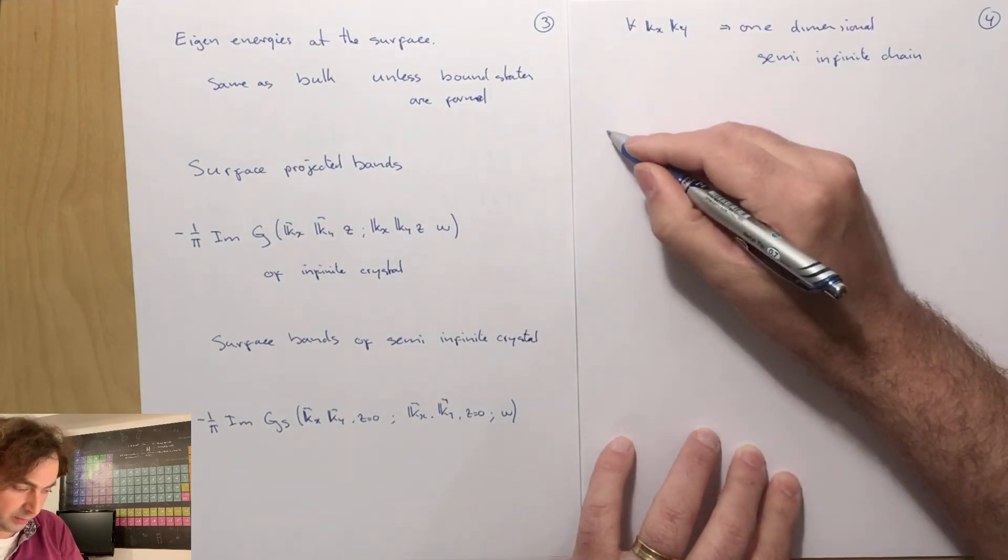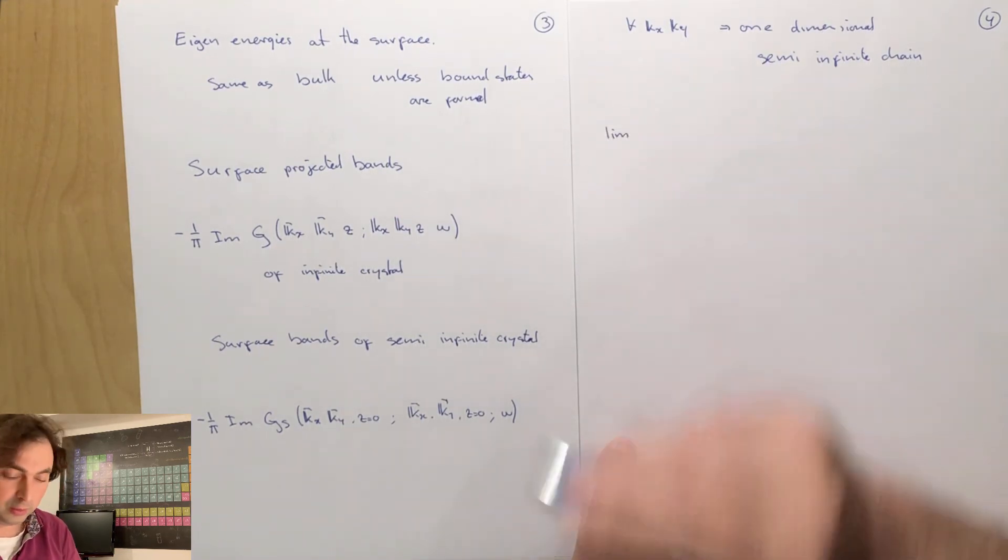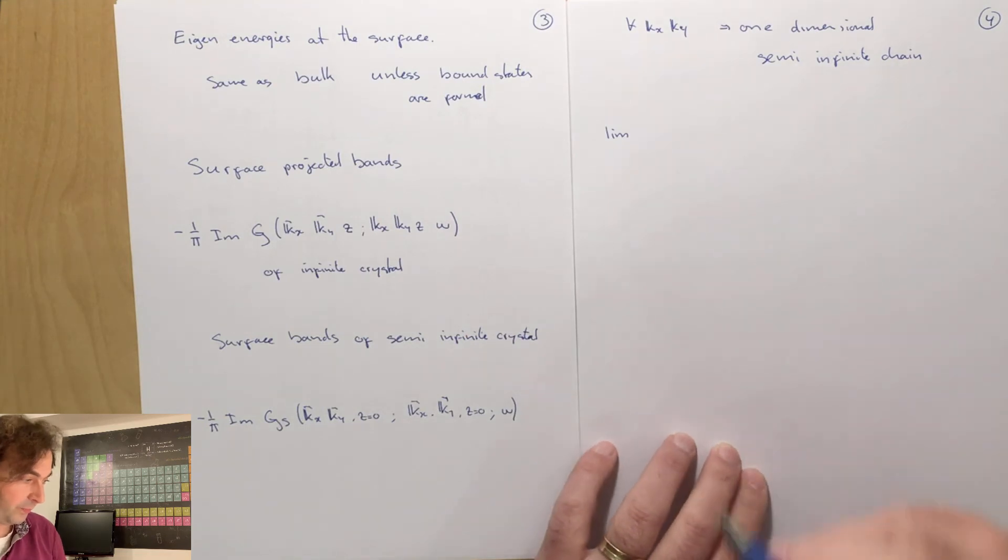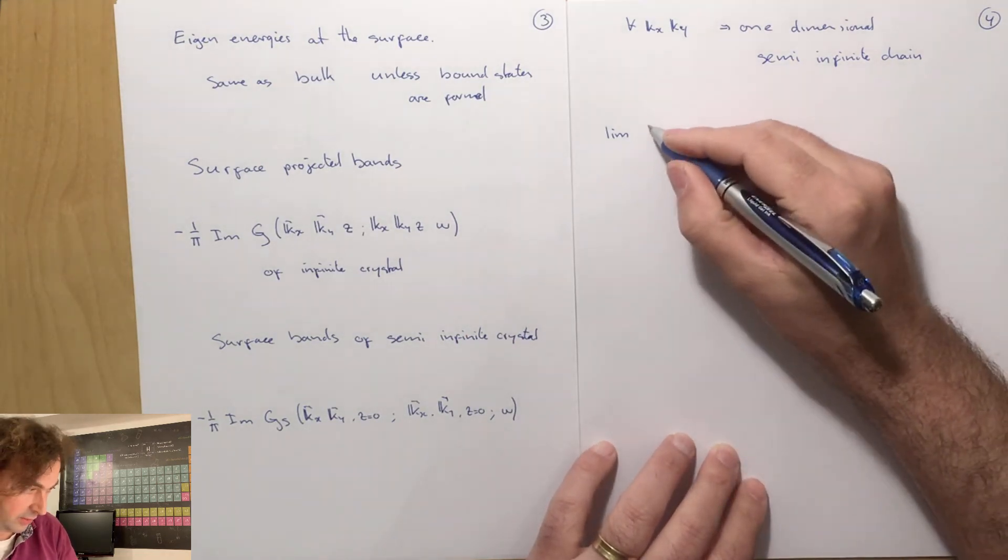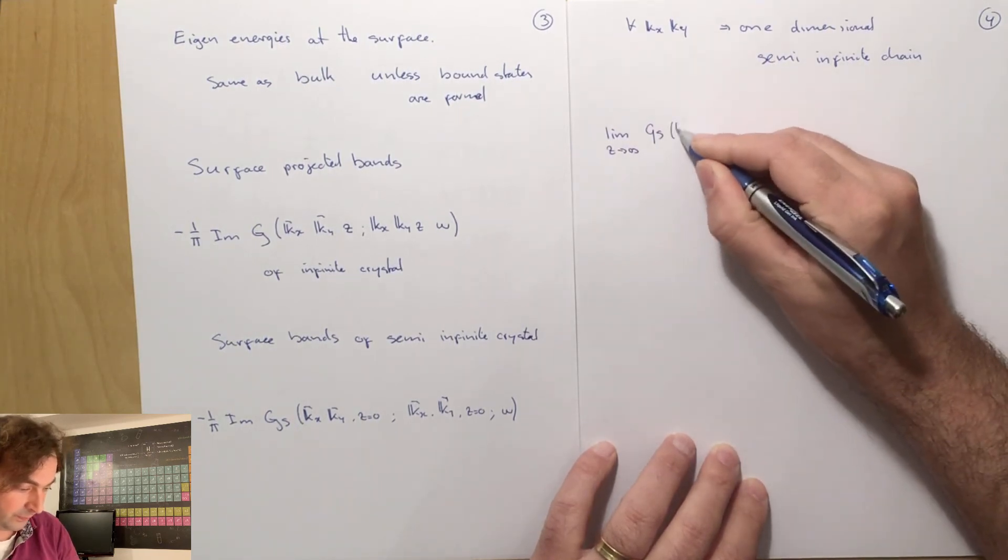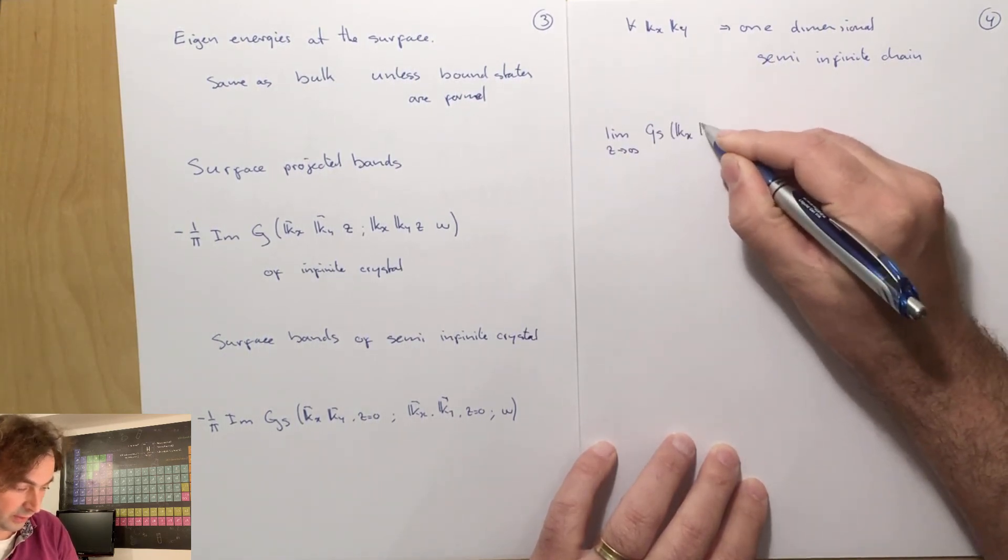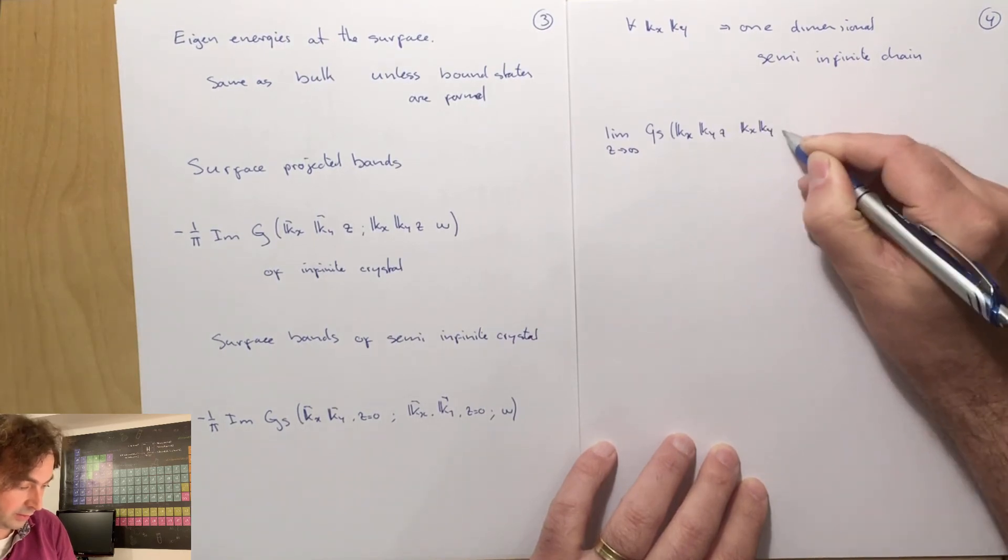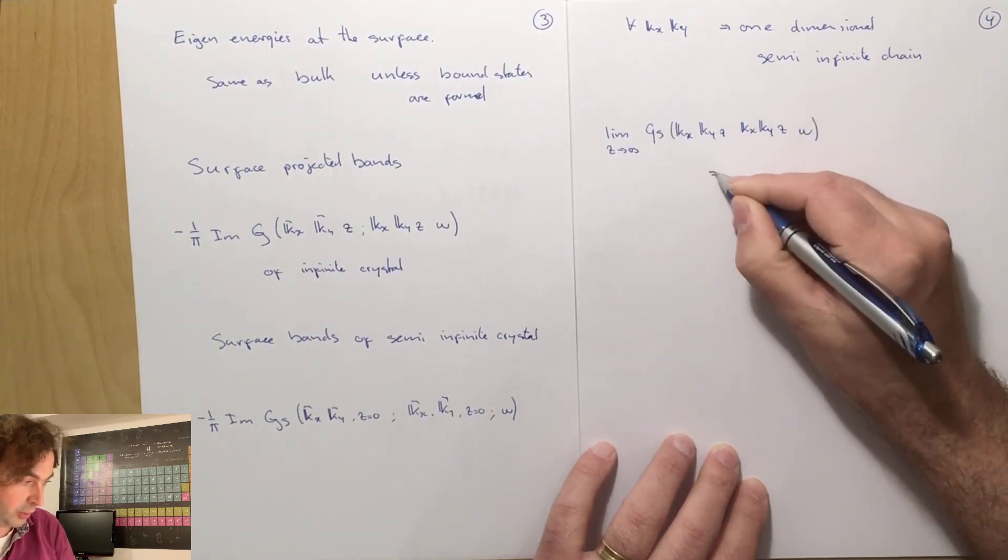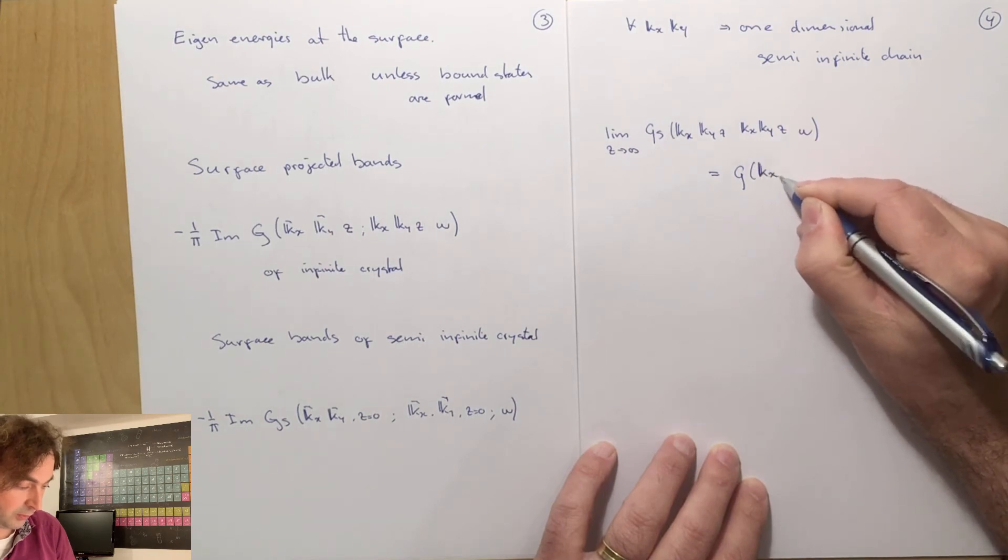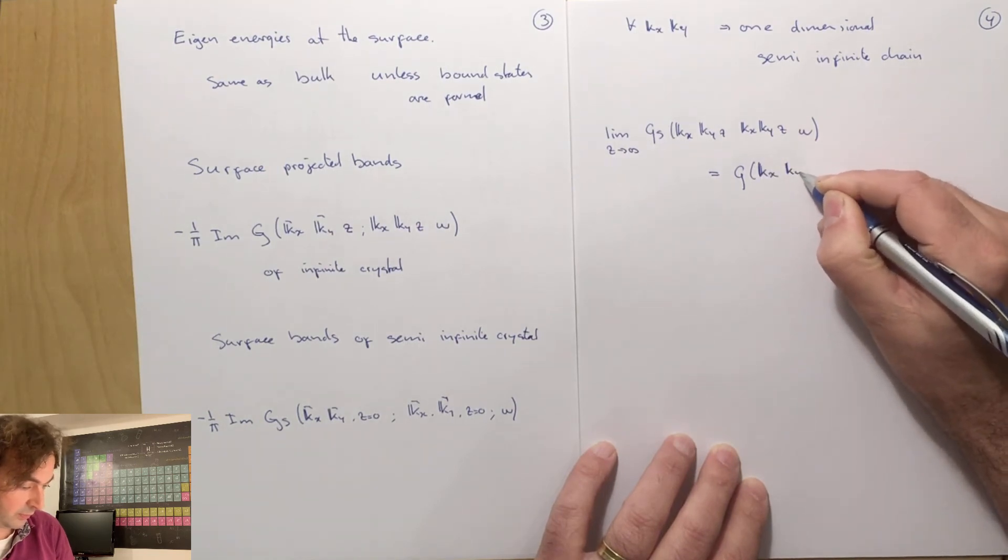We know that if we look at the surface Green's function and do not look at the states at the surface, but deep down into our system, the limit of z to infinity of the Green's function must become equal to the Green's function of the bulk system.